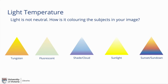Tungsten lights — those are getting phased out because of the energy they consume — are usually used in lamps. In older lamp light, you can see that sort of orange tone in photos. Shade light is usually blue tones going into purples.